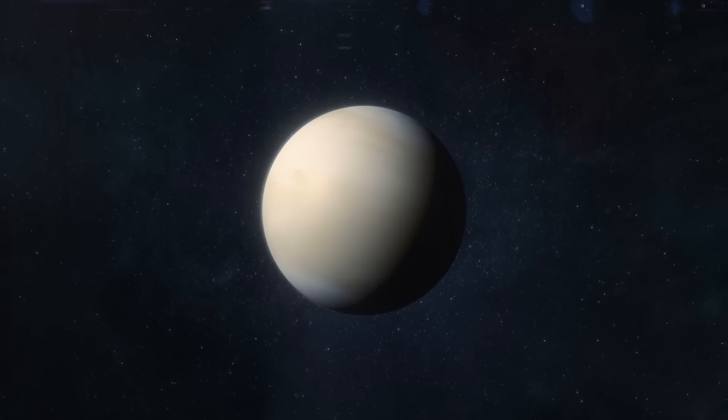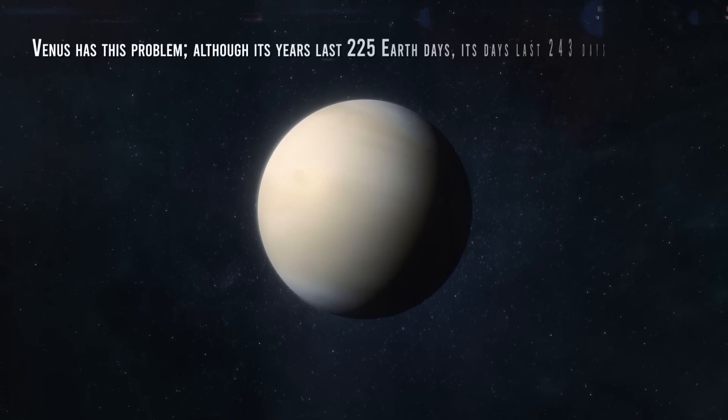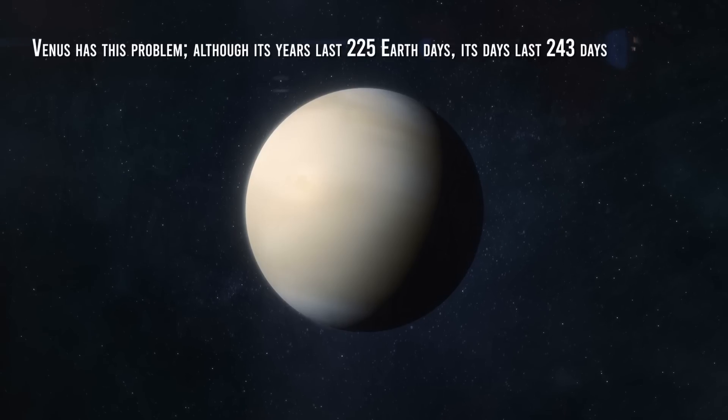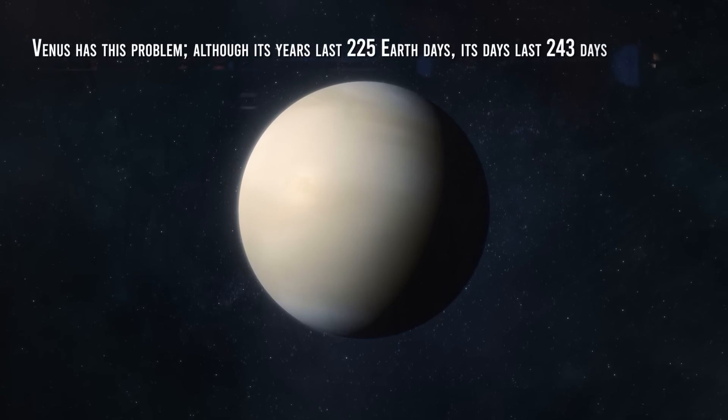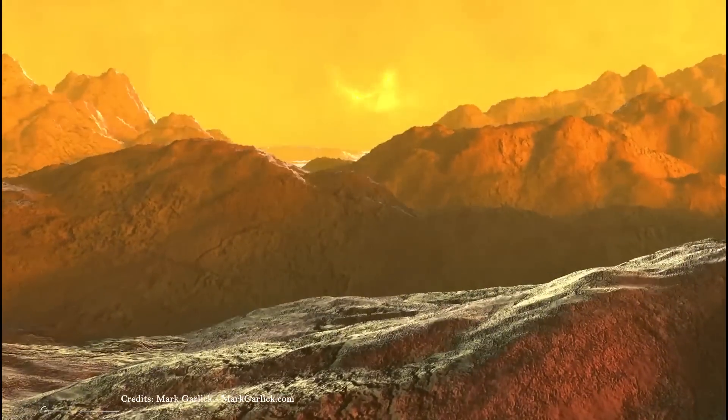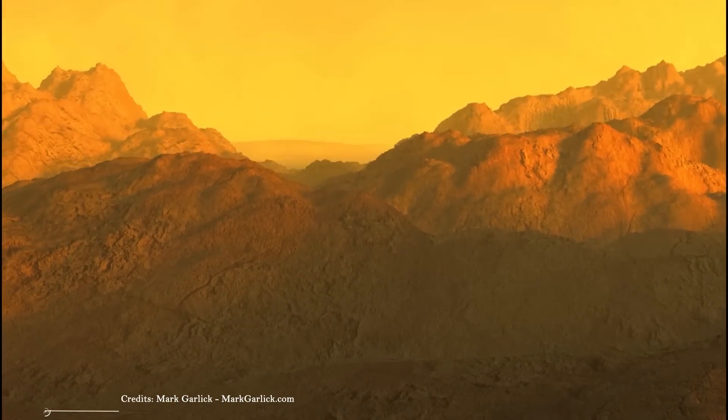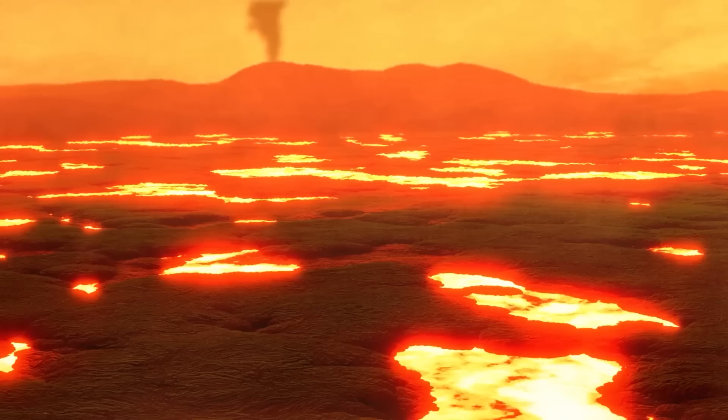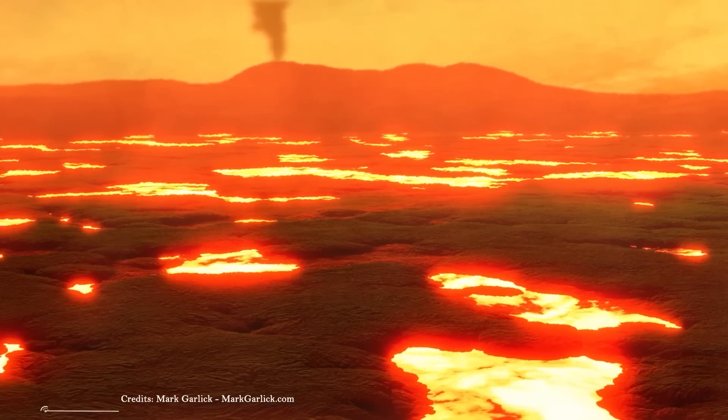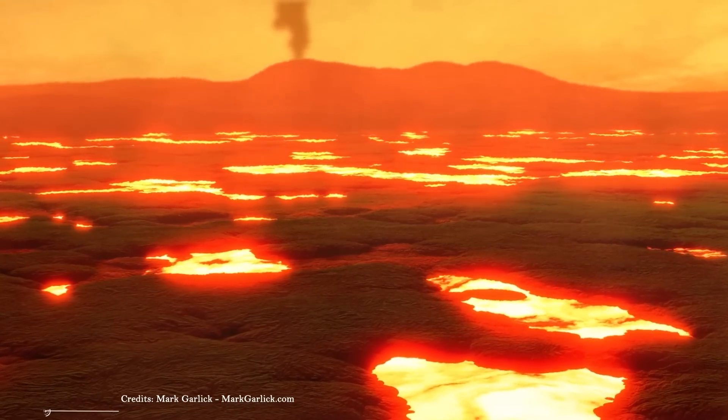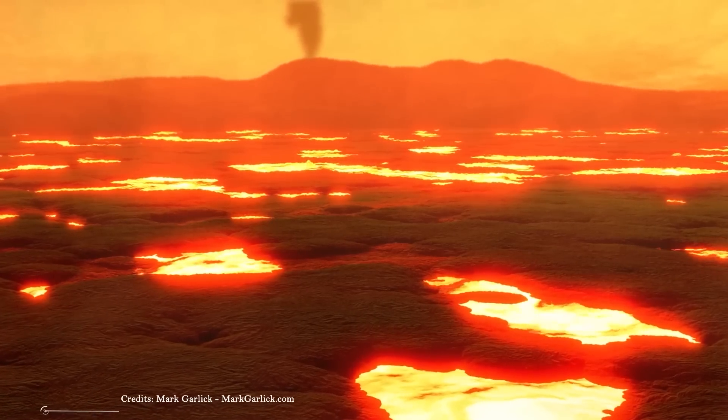Venus has this problem. Although its years last 225 Earth days, its days last 243 days. That is, a day on Venus lasts more than a year. This causes drastic effects on its global climate, since one of the faces of Venus receives 121 days of uninterrupted sunlight, while on the other side, there are 121 days of complete darkness. This produces enormous temperature changes all over the planet.